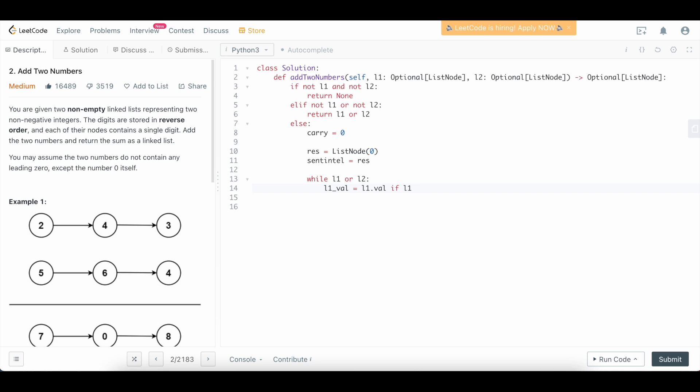Remember, we can't call dot val on a none object because obviously none objects don't have a dot val property, so our code would blow up. So we have to make sure that l1 is valid. If it's not valid, aka it's none, then we can just treat it as if it was zero, because remember adding zero to anything doesn't change the computation. It stays the same; it's basically a no-op. So we'll say if l1 else zero, and we'll do the same thing for l2. So we'll say l2_val equals l2.val if l2 else zero.